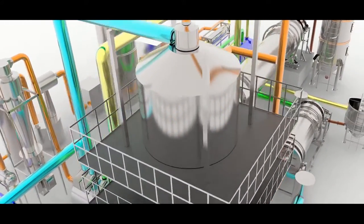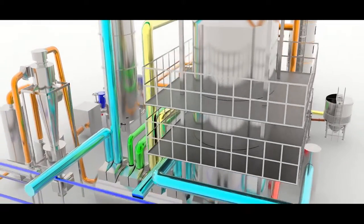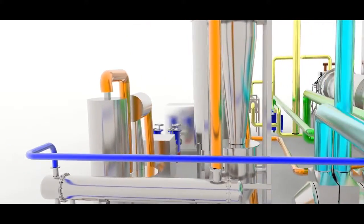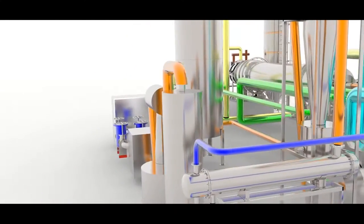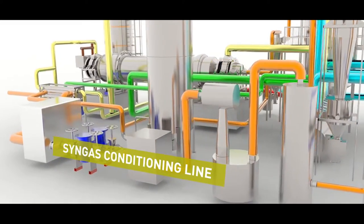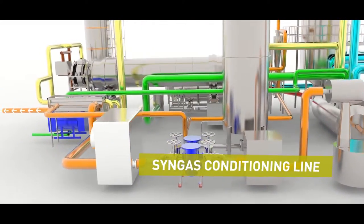The mixture between cracked pyrogas and syngas passes through a heat exchanger, which heats up the steam and the combustion air necessary for both cracking and char gasification. Finally, the syngas conditioning is performed to introduce it into the cogeneration engine.